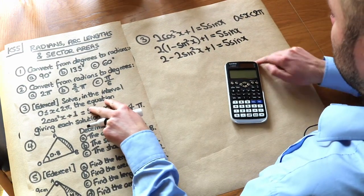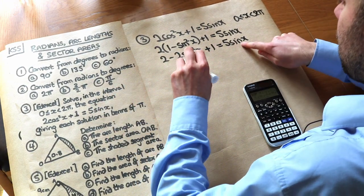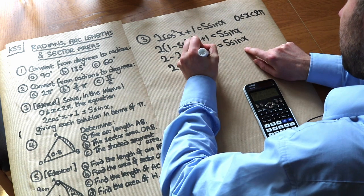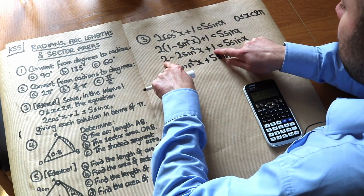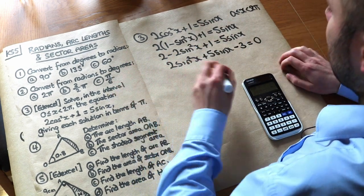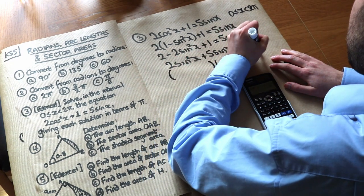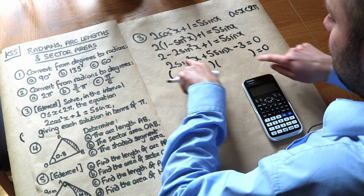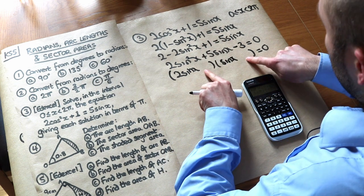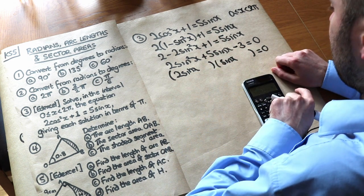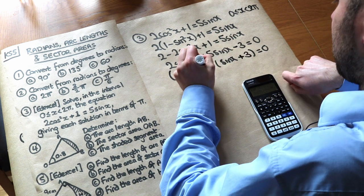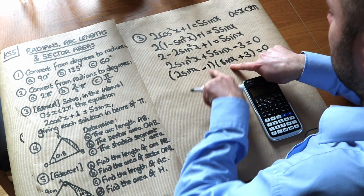Expanding and rearranging — moving everything to the right so the squared term is positive — we get: 2sin²x + 5sinx − 3 = 0. Factorising: we need two terms multiplying to give 2sin²x, so (2sinx)(sinx), and two numbers multiplying to give −3 that also give +5sinx in the middle. Using +3 and −1: 6sinx − sinx = 5sinx. So the factorised form is (2sinx − 1)(sinx + 3) = 0.